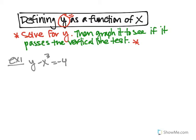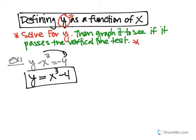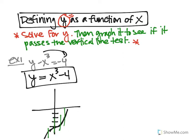In fancy words they'll say define y as a function of x. So when you solve this, you bring that x cubed over to the other side by adding it, and you get y equals x cubed minus 4. You've defined y as a function of x. This is a cubic parent graph that's been moved down 4. If you were to sketch a graph, you'd see that if you draw a vertical line, it only intersects it once. So yes, it is a function.